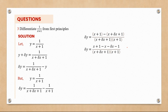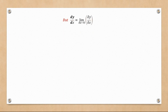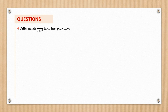Opening the brackets at the numerator — accounting for the negative sign — gives x plus 1 minus x minus Δx minus 1 over the LCM. The x values cancel and the ones cancel, leaving negative Δx over the denominator. Dividing through by Δx gives the slope formula. It's safe to set Δx equal to zero, giving dy/dx equal to negative 1 over (x plus 1) squared.